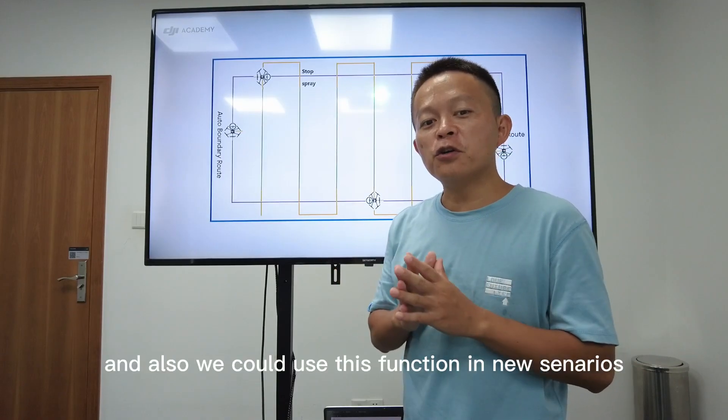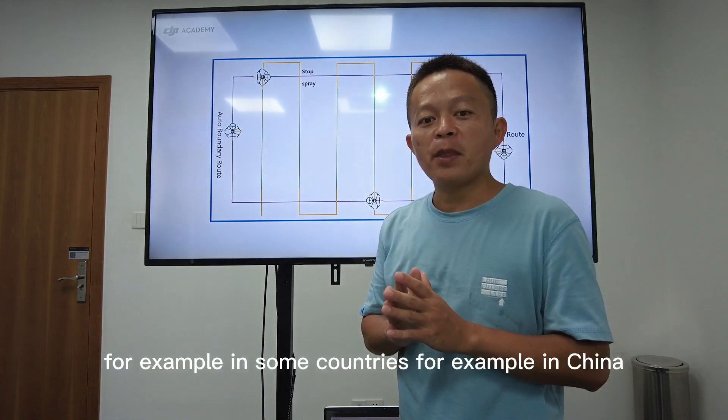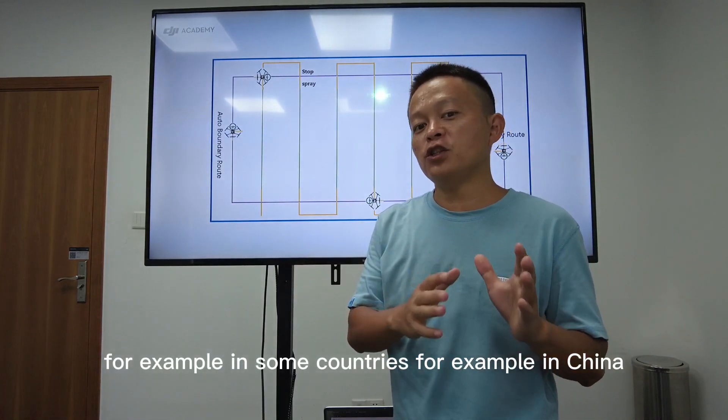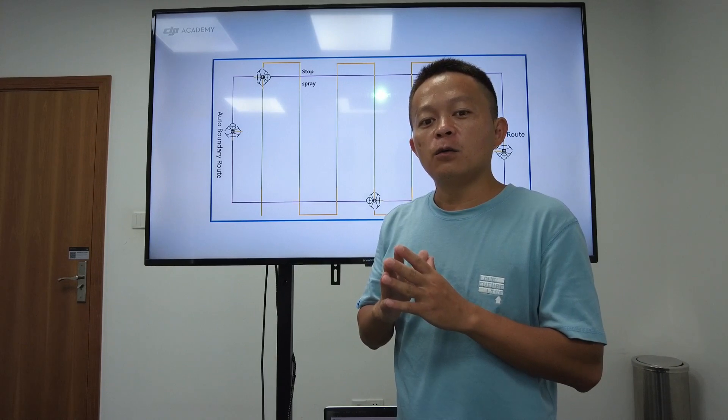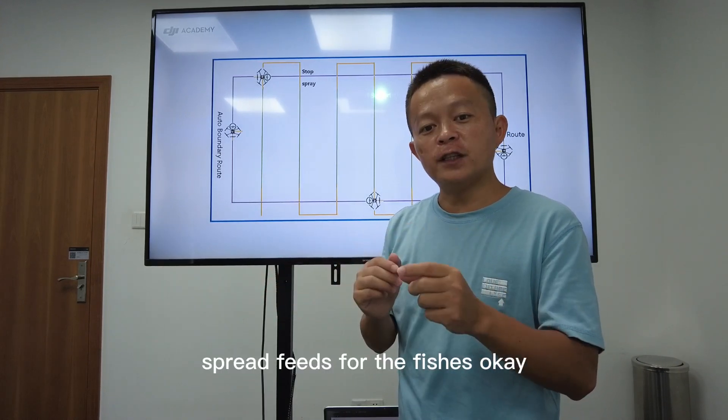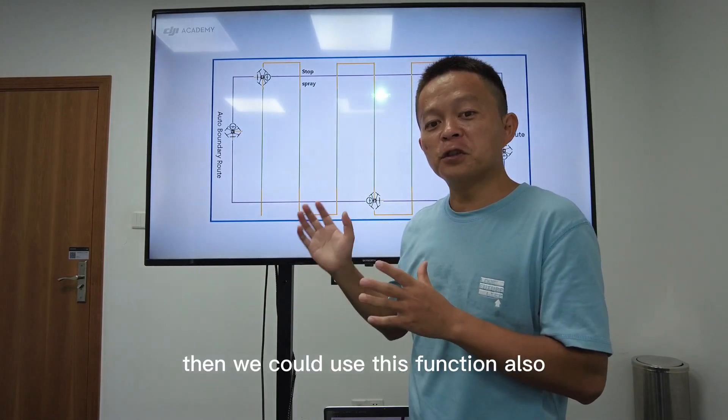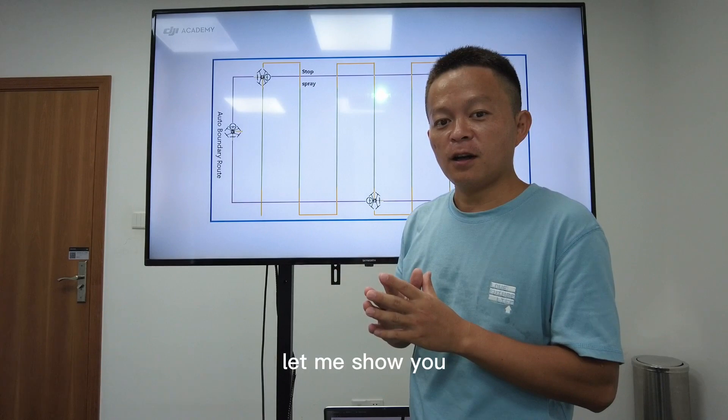And also we could use this function in new scenarios. For example in some countries, for example in China, we have some fish ponds which need to spread feeds for the fish. Then we could use this function also. Let me show you.